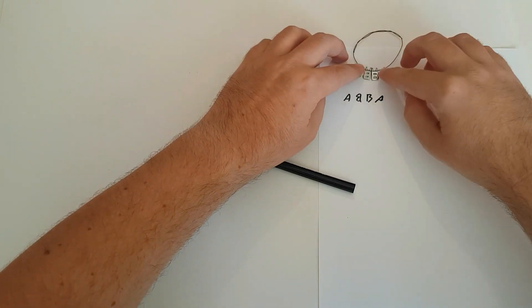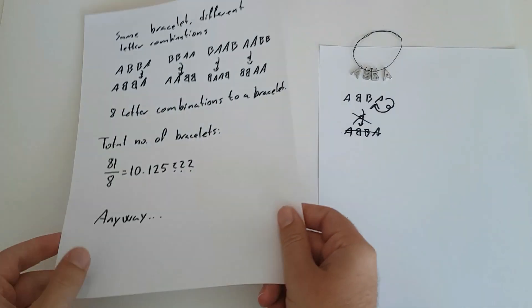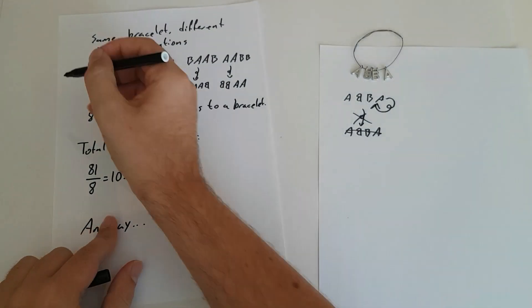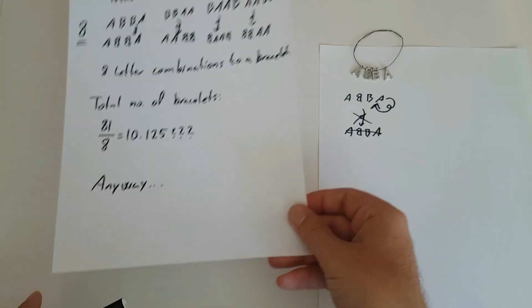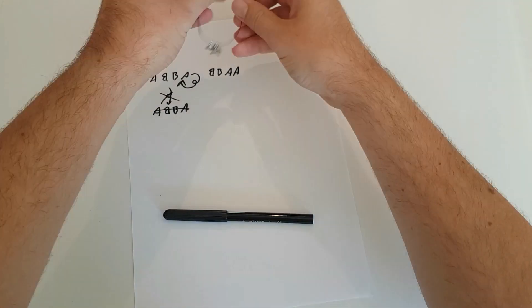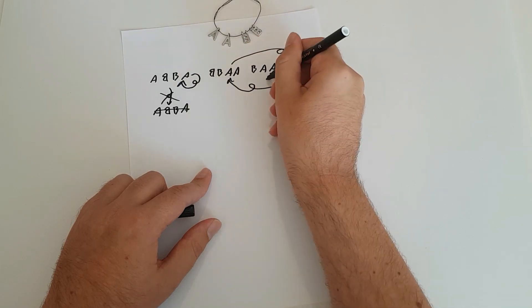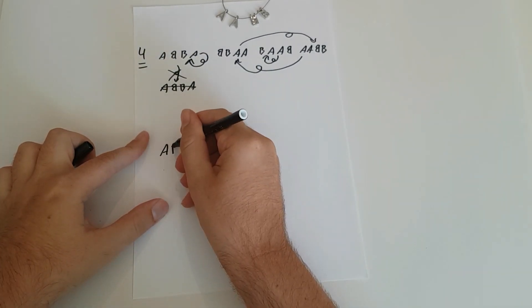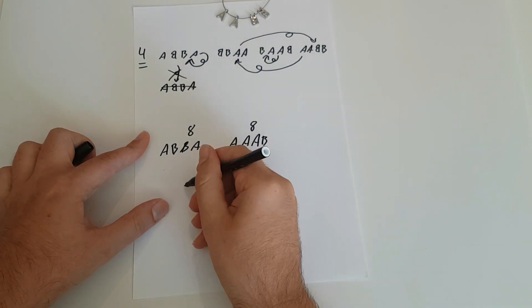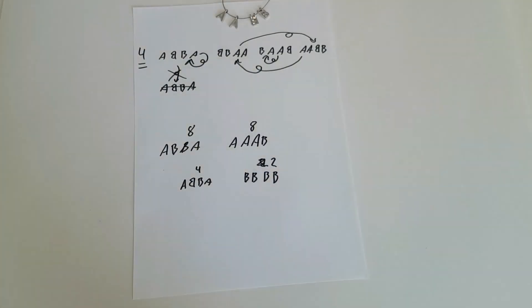So where we previously had eight letter combinations — four different orders to put the letters in, and each of them could be reflected — on this one, reflecting gives us the exact same letter combination back, so we have only four different letter combinations. This means that among the 81 different letter combinations, some go together in groups of eight to a bracelet, some go in groups of four. How do I now find the actual number of bracelets?